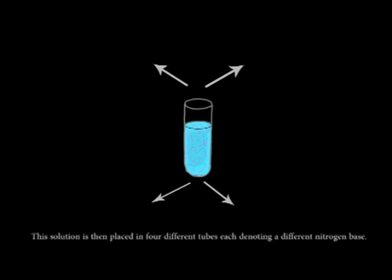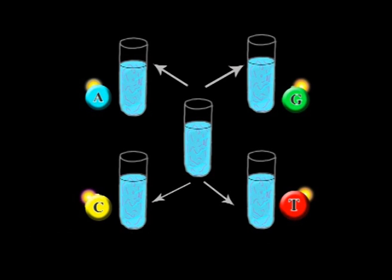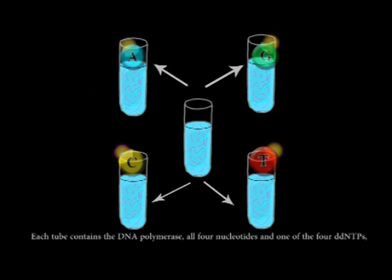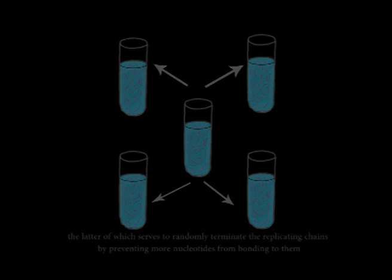This solution is then placed in four different tubes, each denoting a different nitrogen base. Each tube contains the DNA polymerase, all four nucleotides, and one of the four DDNTPs, the latter of which serves to randomly terminate the replicating chains by preventing more nucleotides from bonding to them.